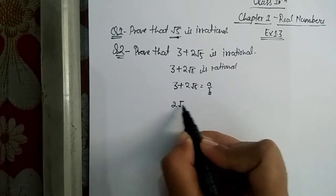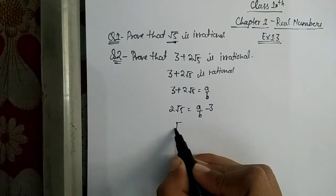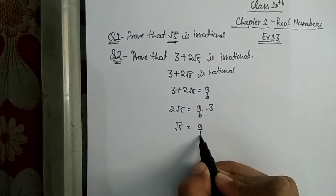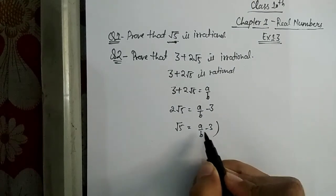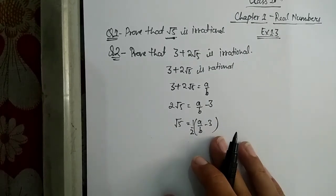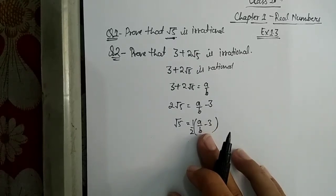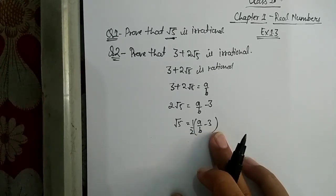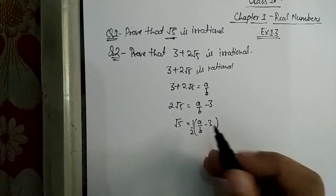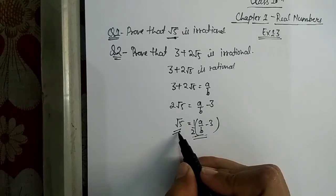Then, 2√5 = a/b − 3. Therefore √5 = (1/2)(a/b − 3). Now, since a and b are integers, (1/2)(a/b − 3) will also be rational. If the right-hand side is rational, then the left-hand side will also be rational, meaning √5 would be rational.